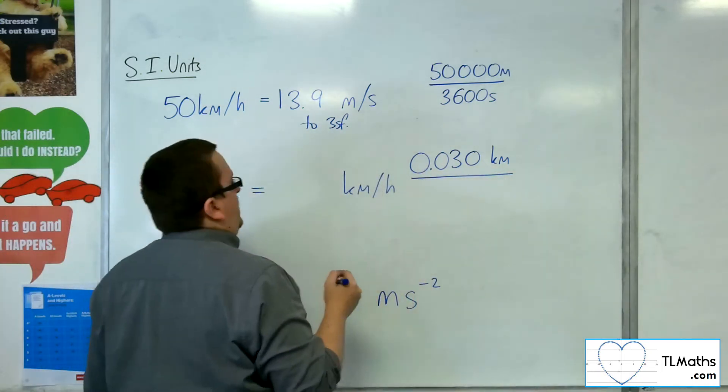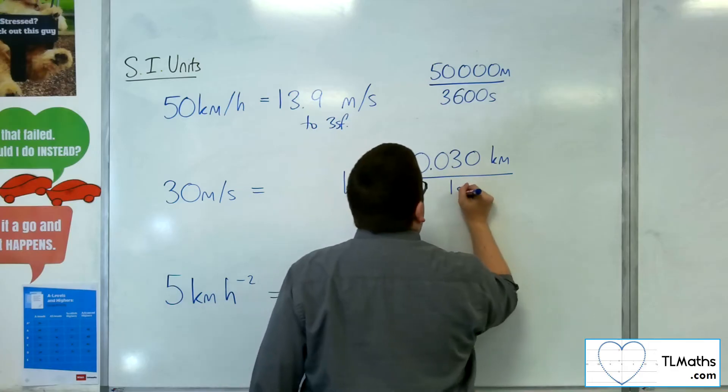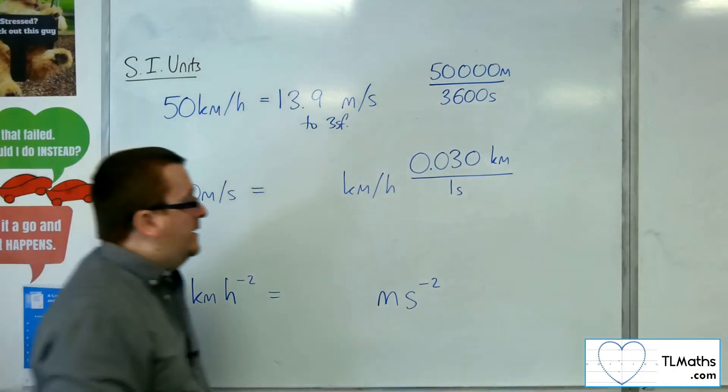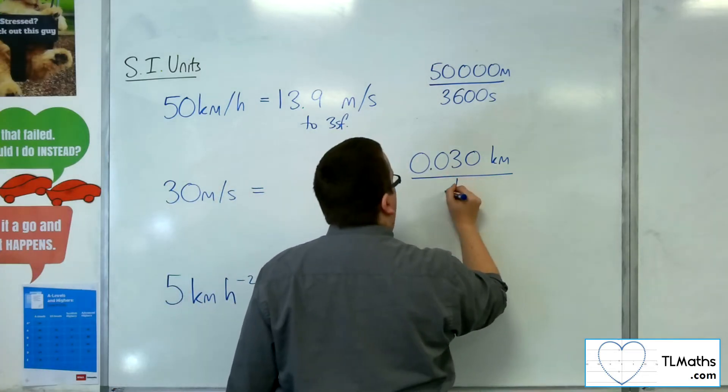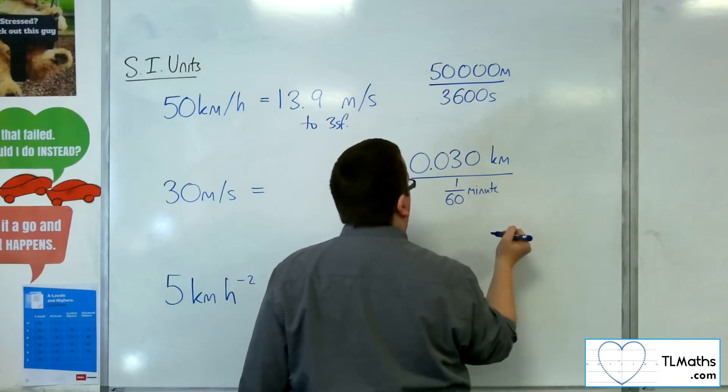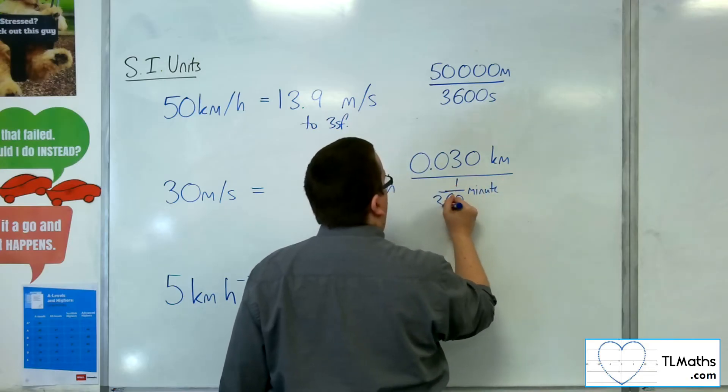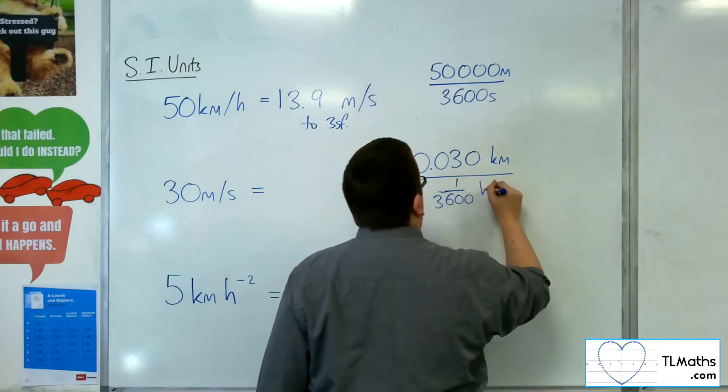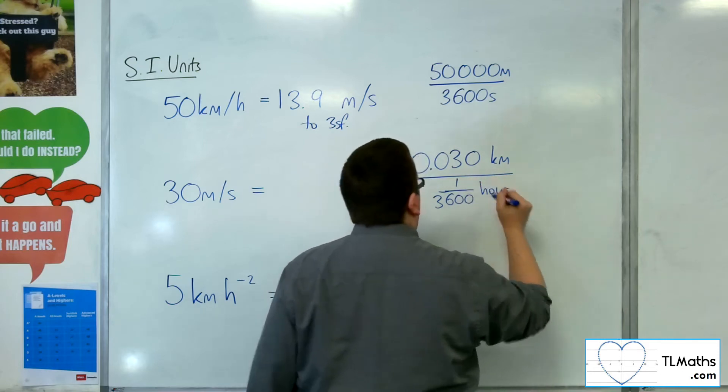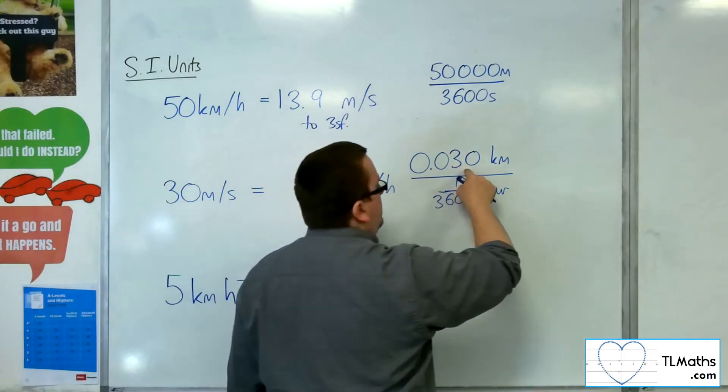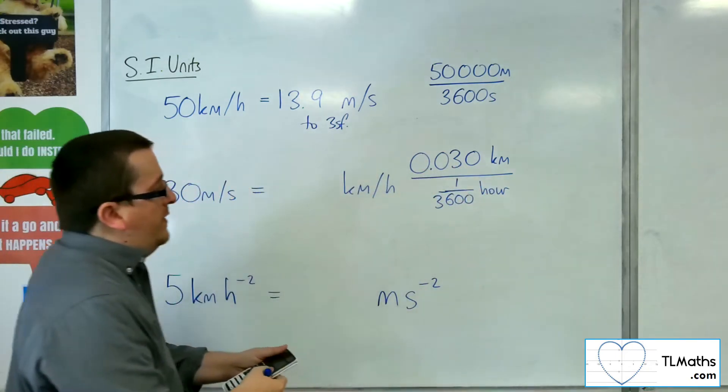Now I'm currently saying I'm going to do that in 1 second. Now 1 second is 1/60th of a minute, which is 1/3,600th of an hour. So I've got this 0.03 divided by 1 over 3,600.